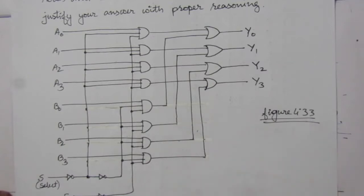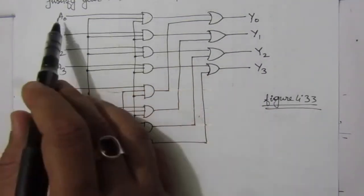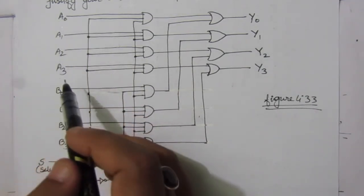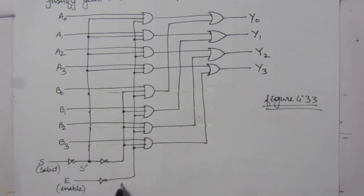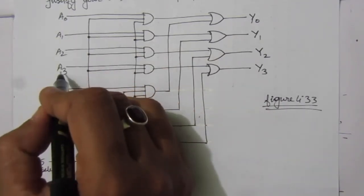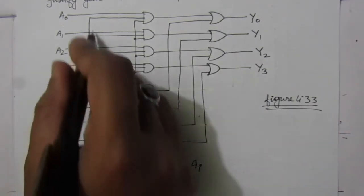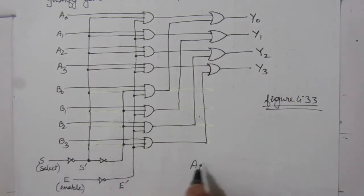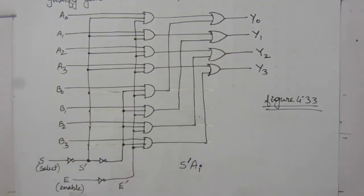From figure 4.33 we have to find the expressions for Y0, Y1, Y2, and Y3. For the top AND gates, one input is A0, A1, A2, or A3 (represented as Ai), the second input is the inverted select S-bar, and the third input is the inverted enable E-bar. So the output of these four gates is E-bar multiplied by S-bar multiplied by Ai.